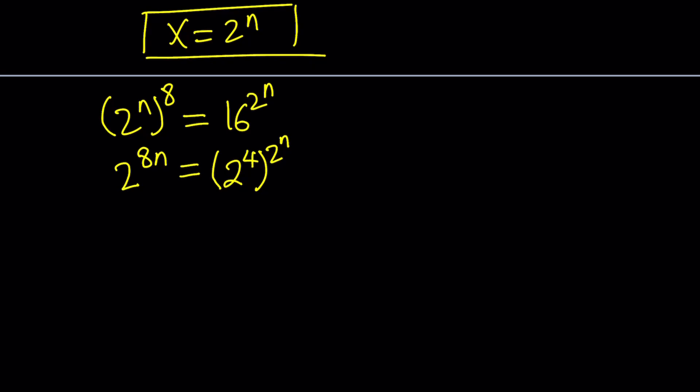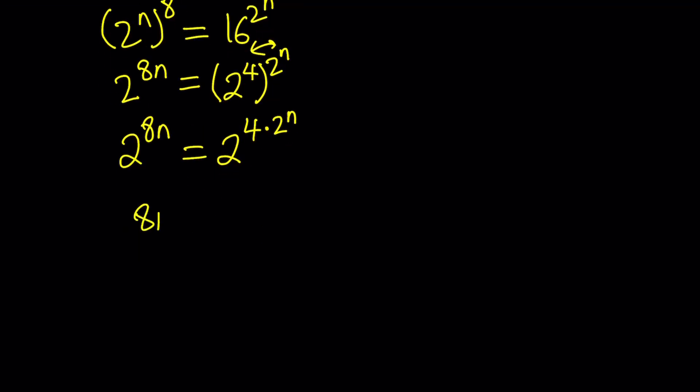First of all, we can replace the 16 with 2 to the 4th power since that's a power of 2 and then raise it to the power 2 to the power n. This one can be multiplied and that gives us 2 to the power 8n. Now, since we have two exponents, they are multiplied here, so that gives us 2 to the power 4 times 2 to the power n. Now, the bases are equal, so are the exponents, which means 8n equals 4 times 2 to the power n.